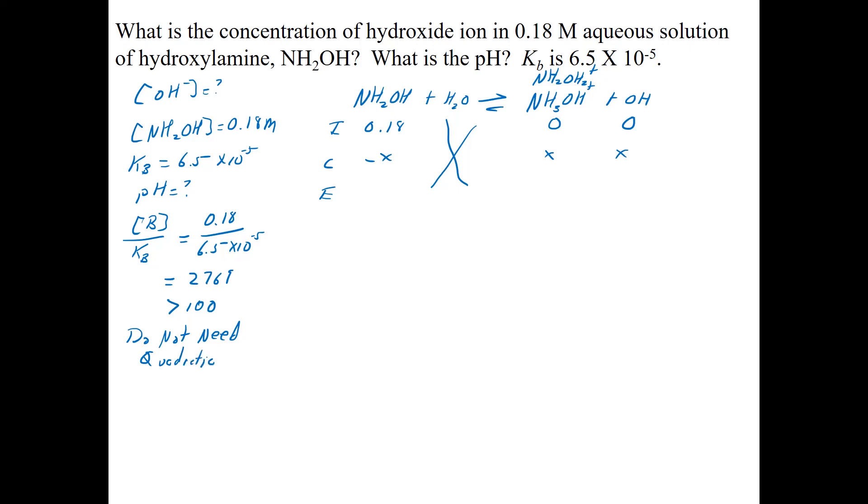So that means that I can, what that translates to practically is that I can cross out this X minus. So my Kb expression is NH3OH+ times OH minus over the NH2OH. I have 6.5 times 10 to the minus 5, X times X is X squared, and 0.18 for the bottom.